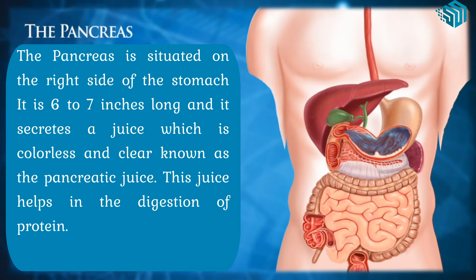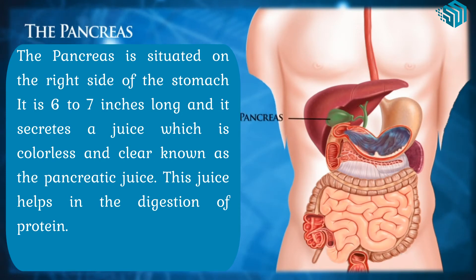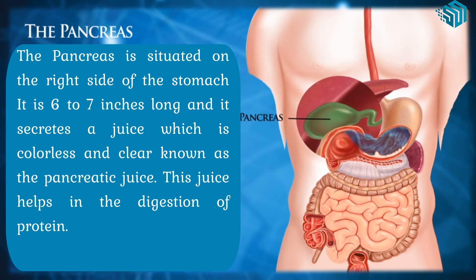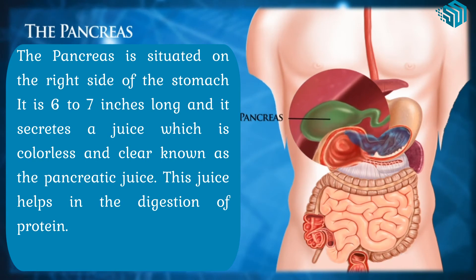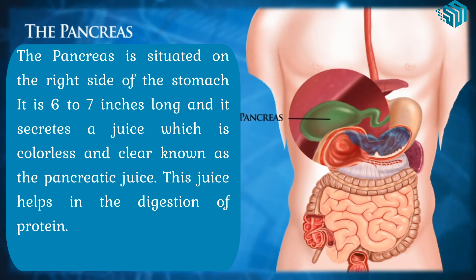The pancreas is situated on the right side of the stomach. It is 6 to 7 inches long and it secretes a juice which is colourless and clear, known as the pancreatic juice. This juice helps in the digestion of protein.